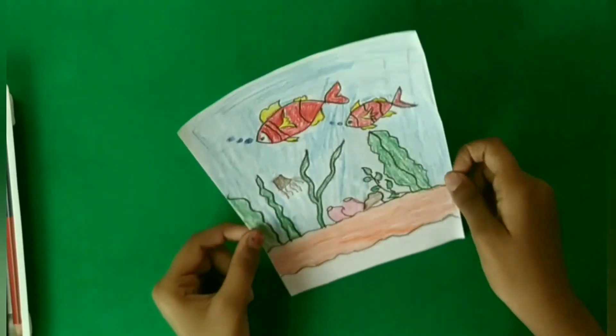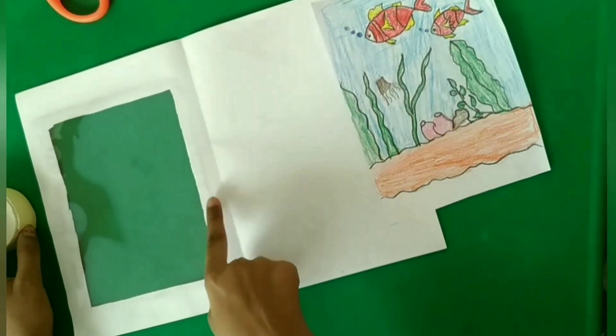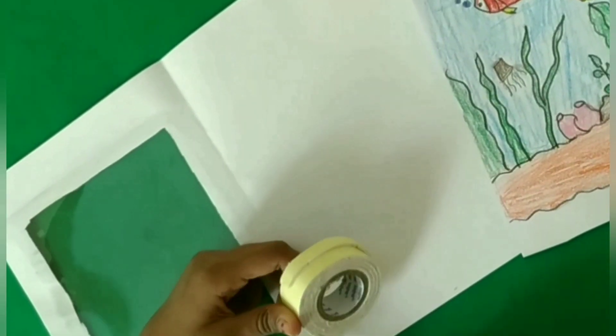Now my coloring is finished. Now we'll apply double-sided tape on all four sides.